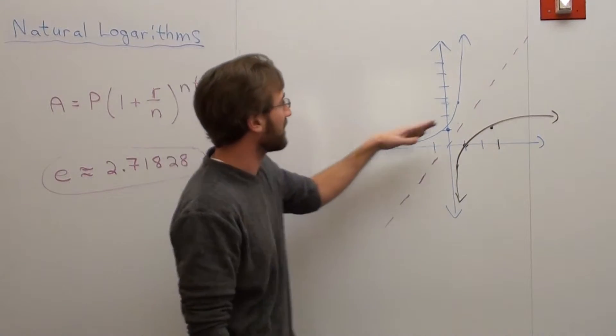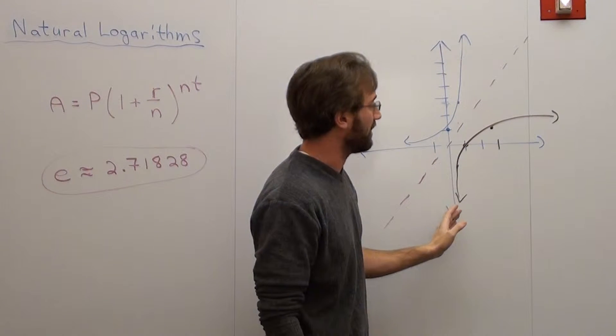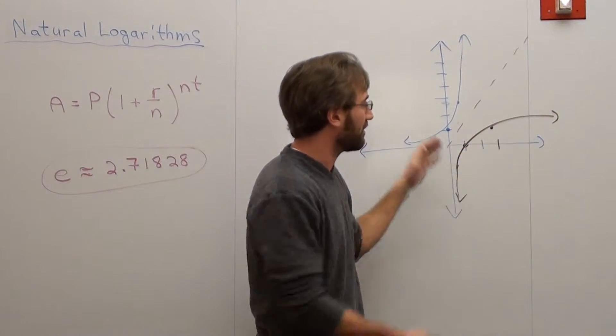And the graph of it looks something like this, where at 0 it's 1 and at 1 it's 2.78. And natural logarithms looks like this, probably not perfect, but it's inverse.